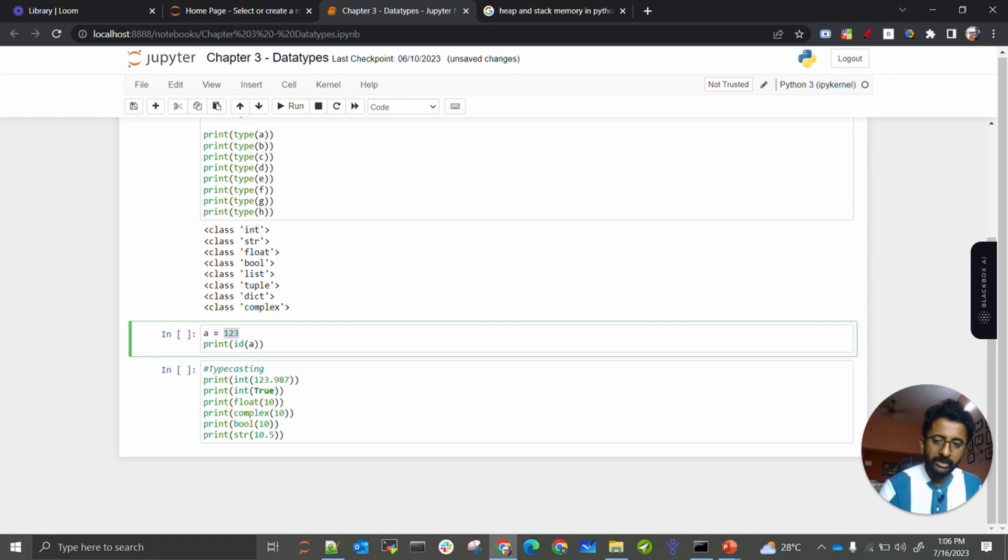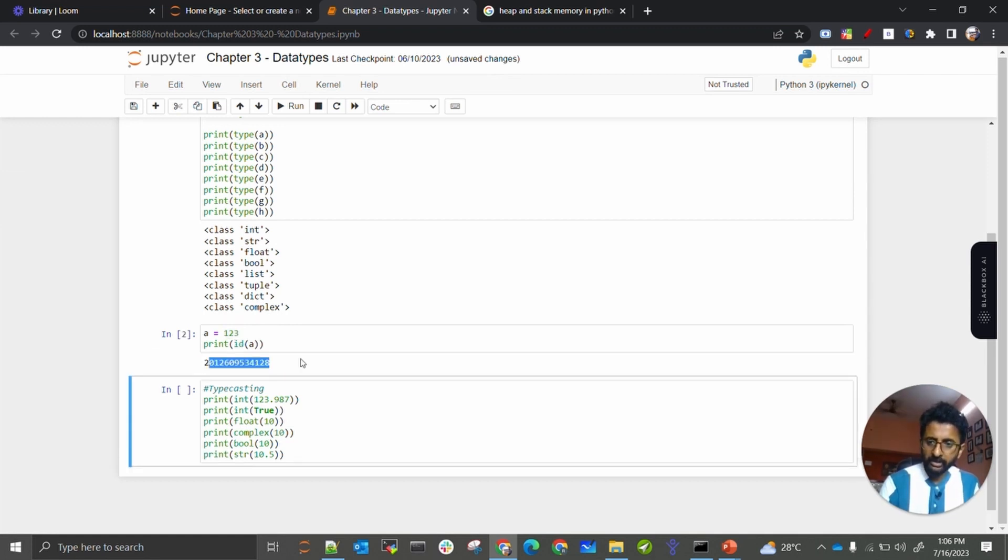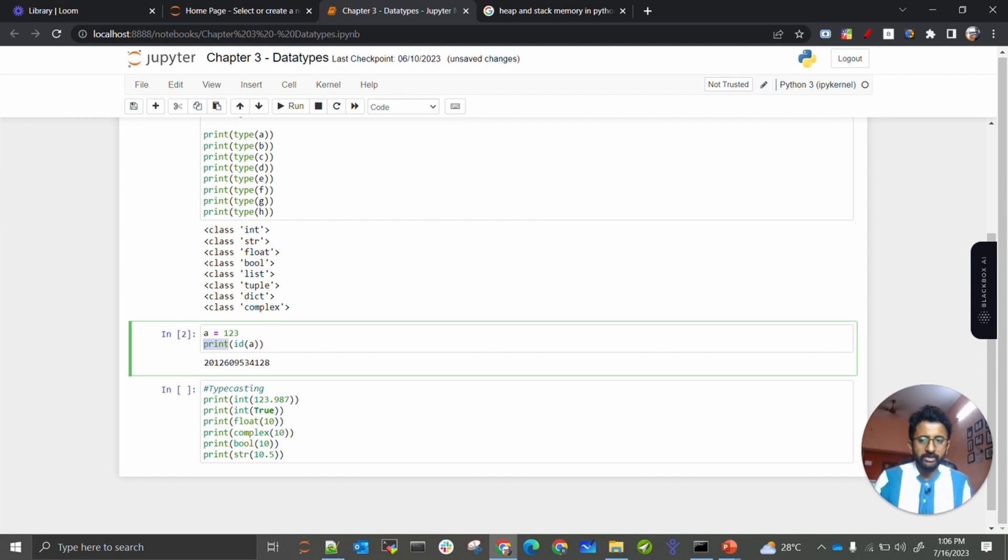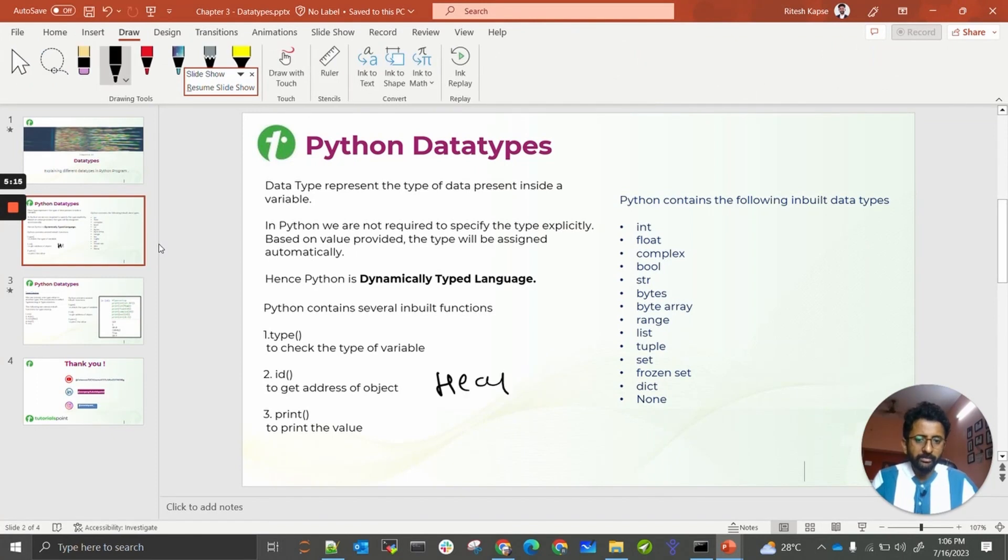Now, whenever you want to see where exactly this is stored, you can just check it with id. It will tell you, okay, in this particular system at this location, this e is stored. There are two types of memories that we have: one is heap memory, one is stack memory.